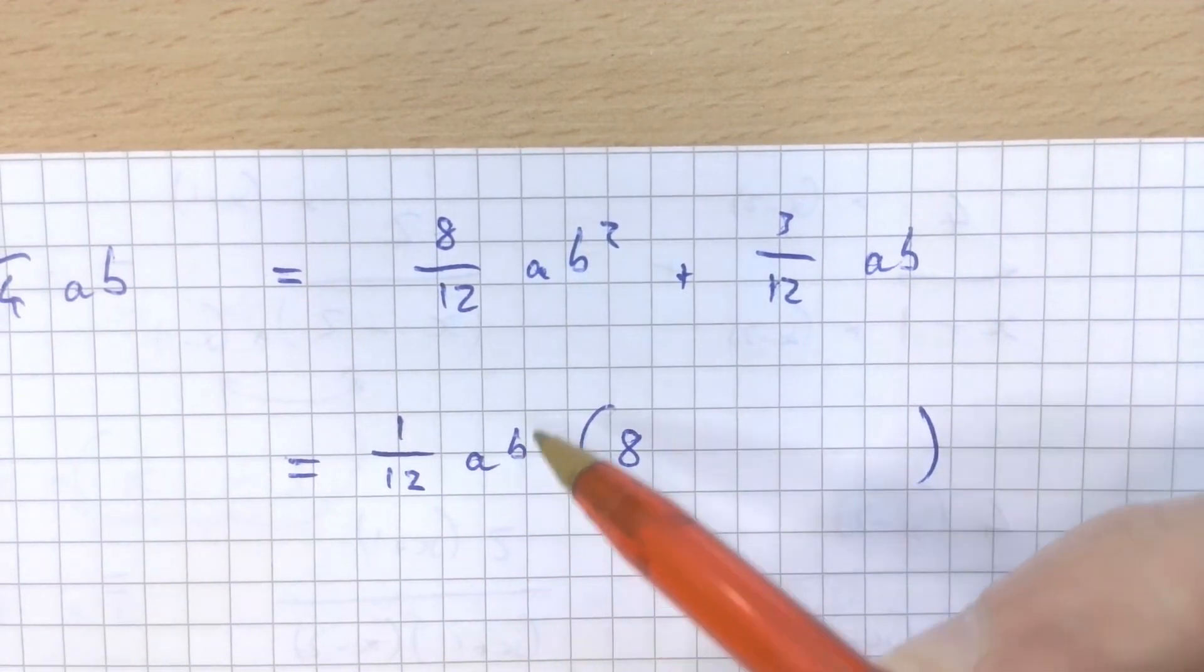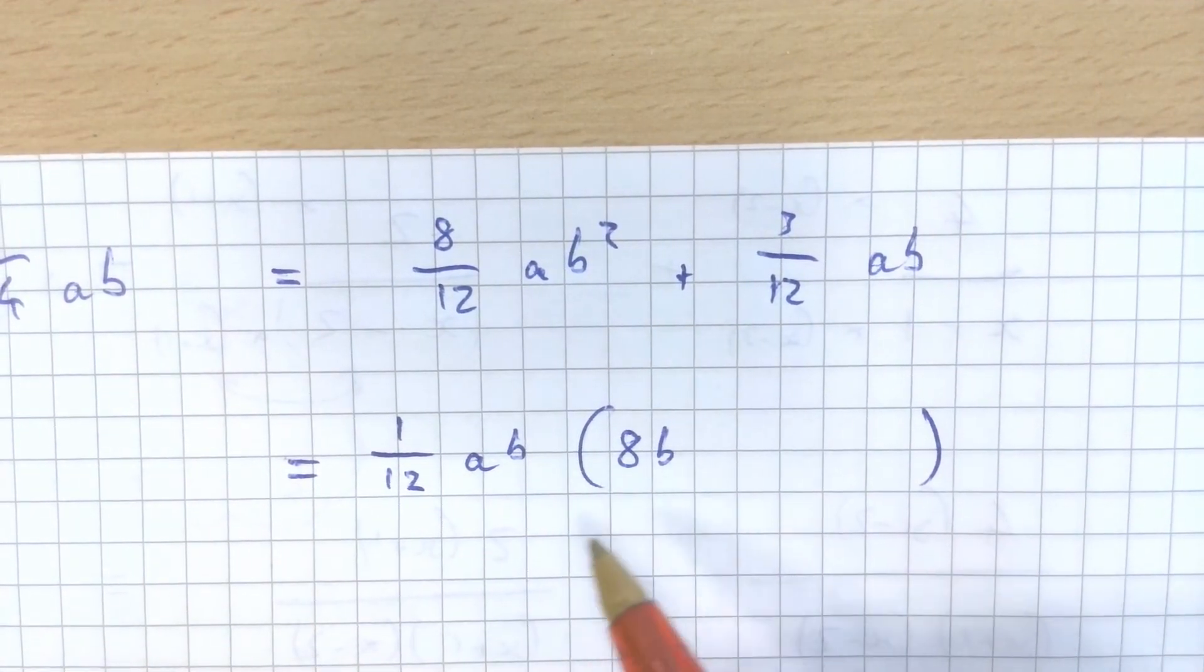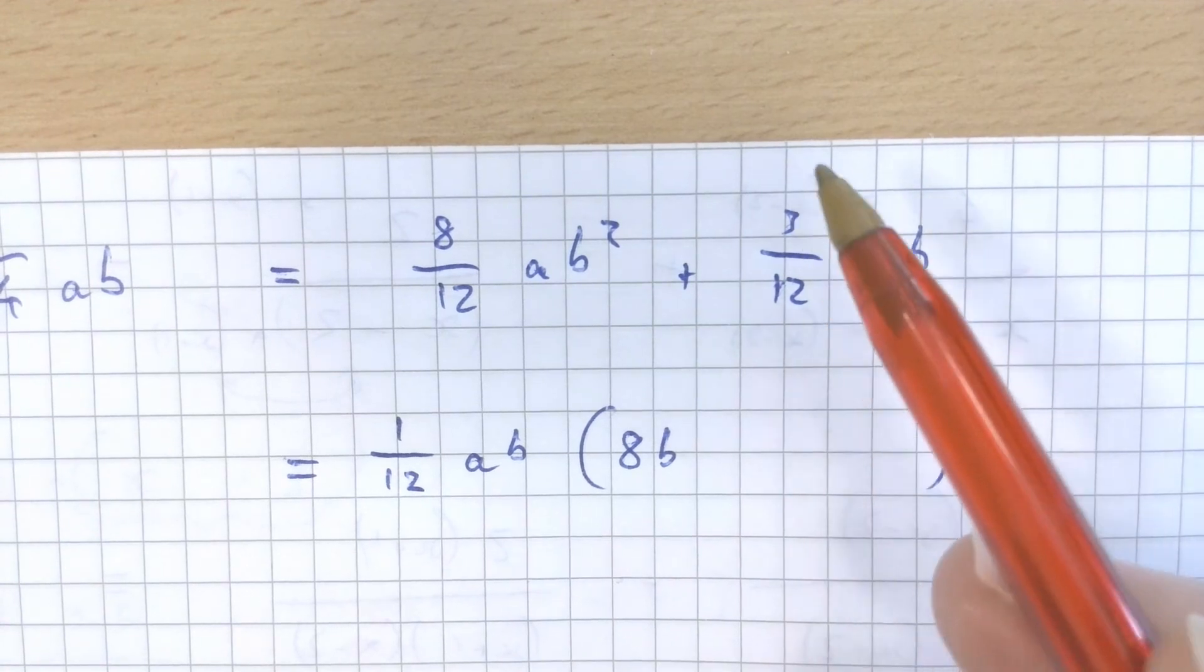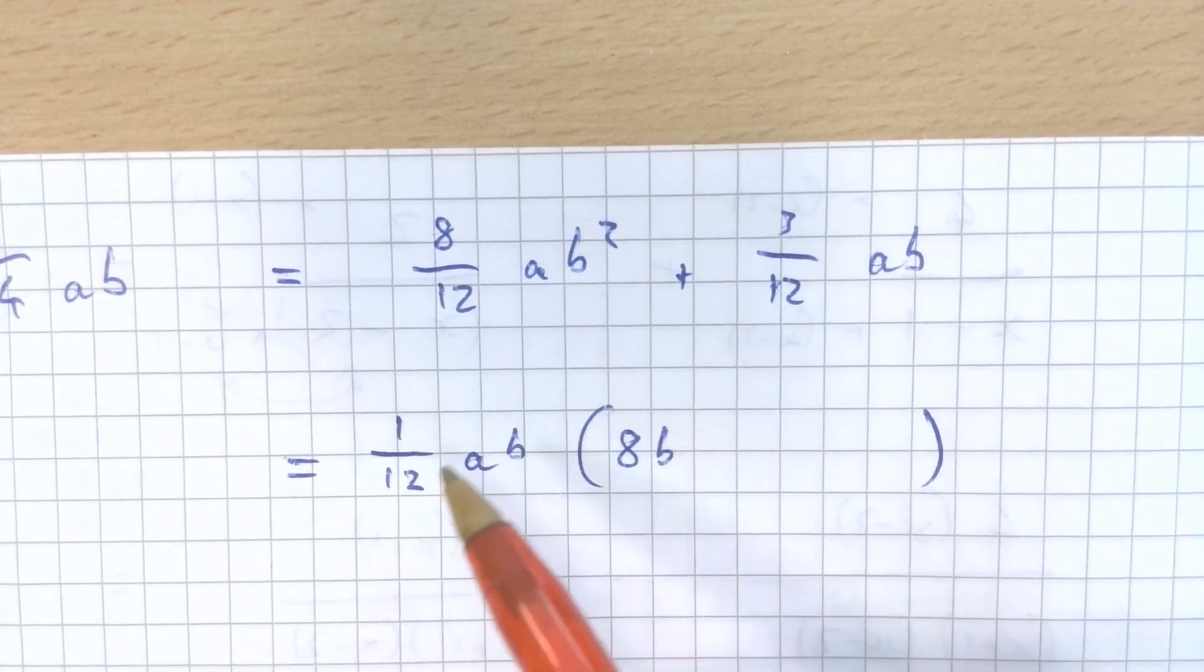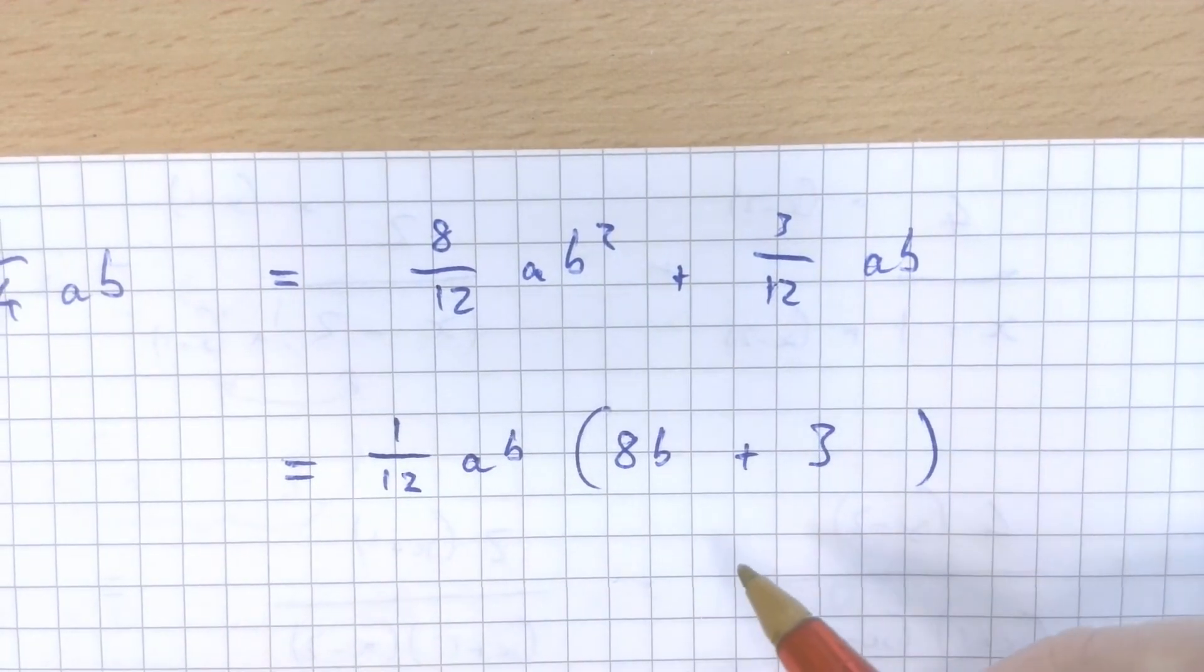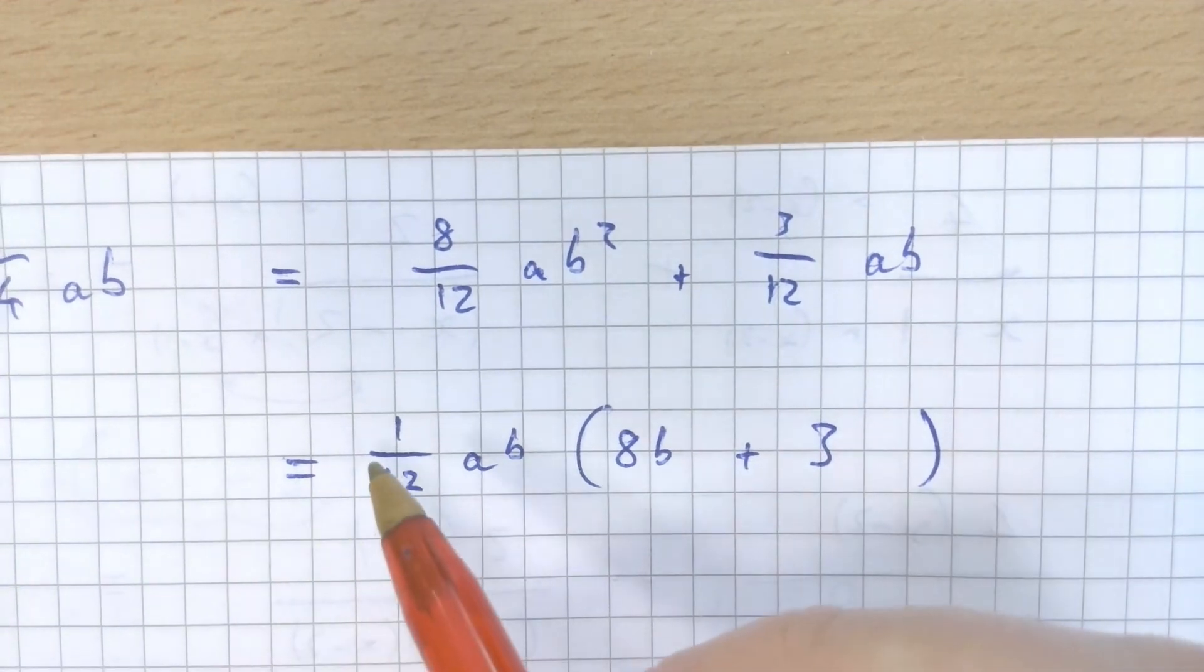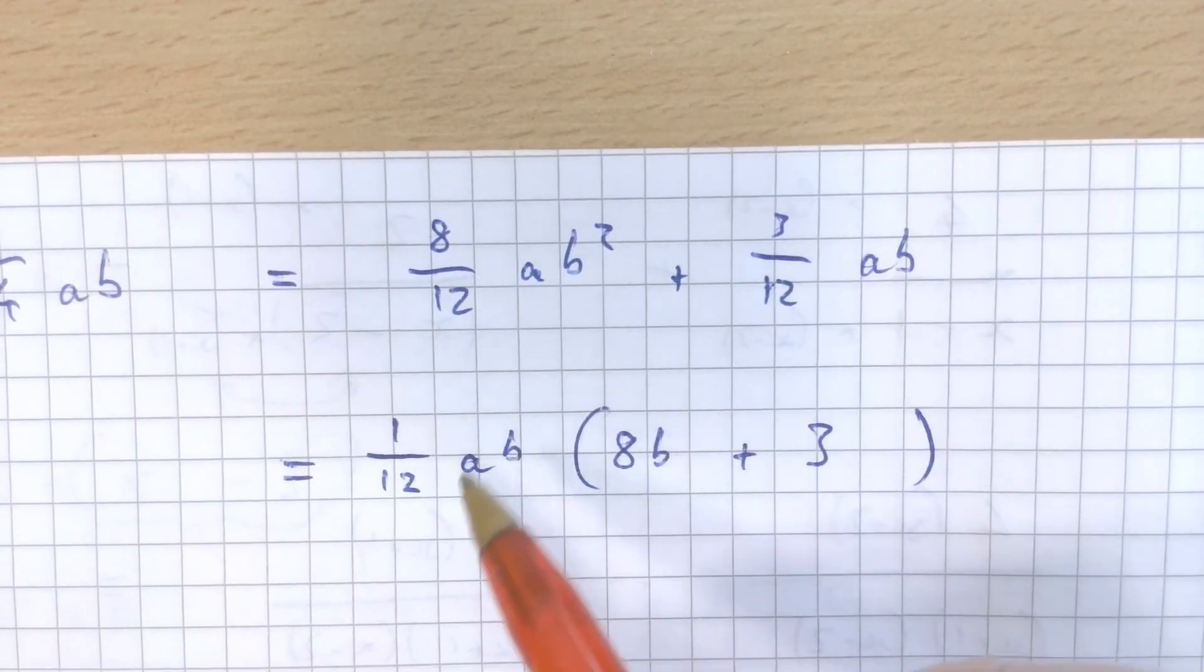And then we already have an a here. And to make b into b squared, this term needs to contain the letter b. And then for 3 twelfths a b, what do I times 1 twelfth a b by to make 3 twelfths a b? You should see that that's just 3, because 3 is multiplied by 1 twelfth to make 3 twelfths. And then we already have the a b outside of the bracket.